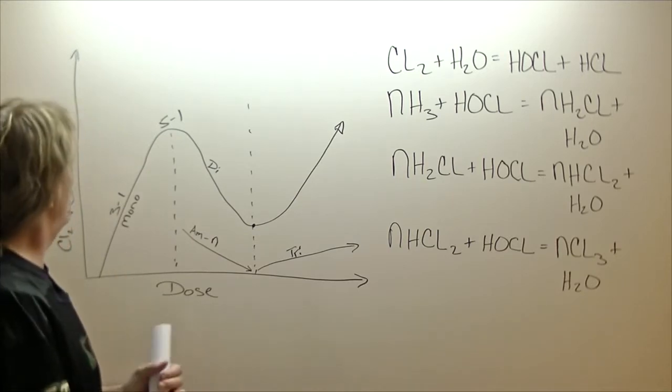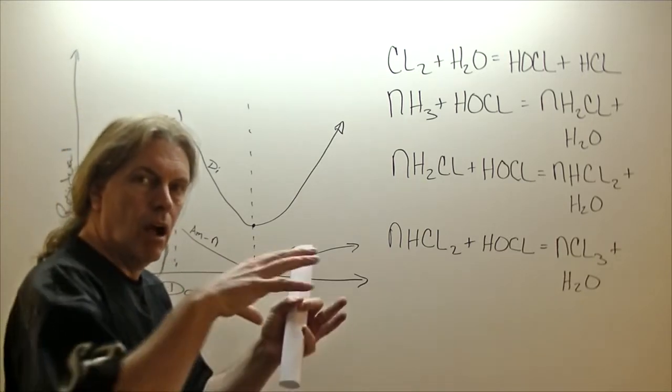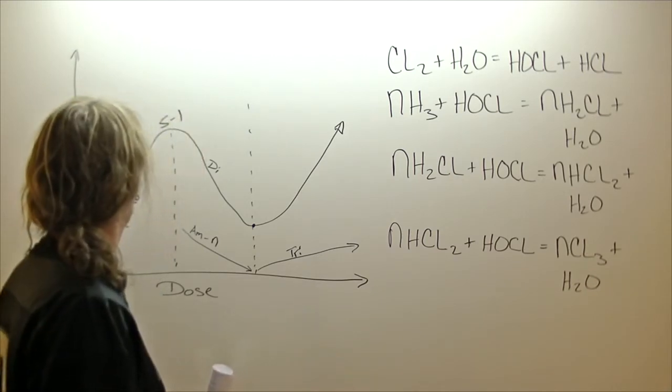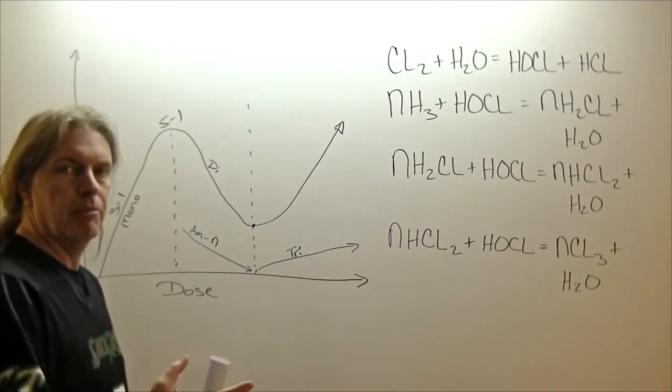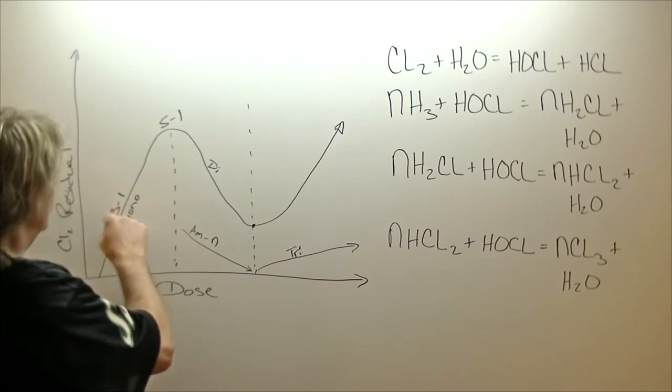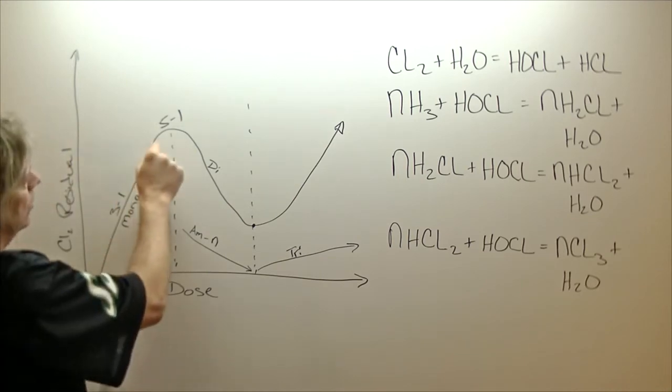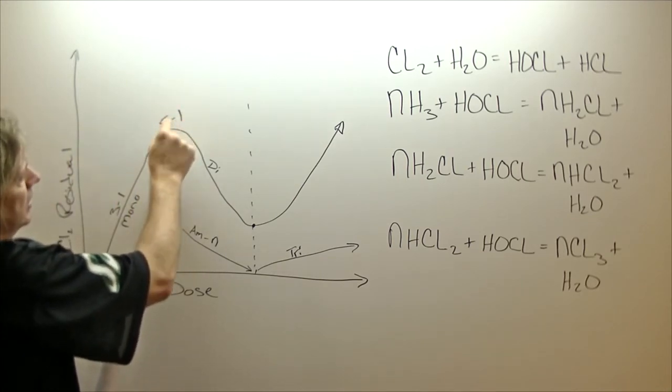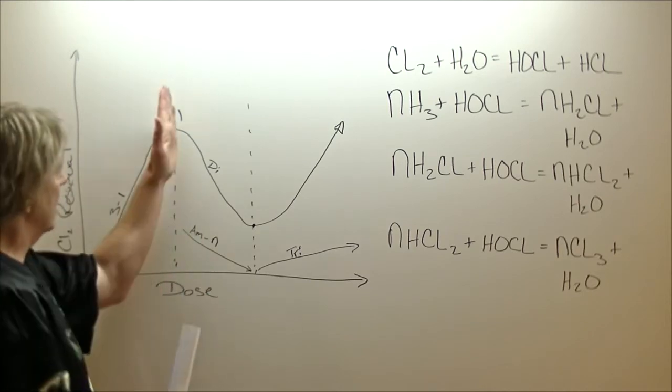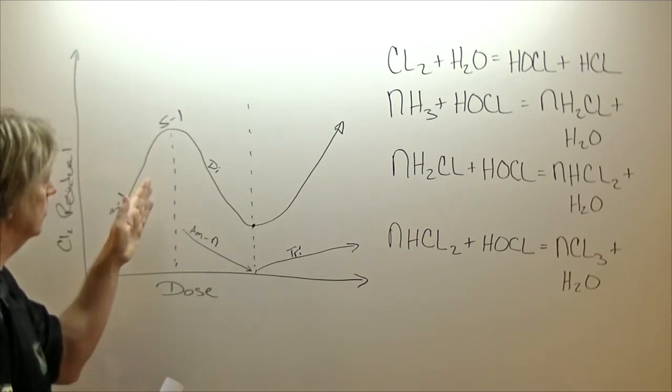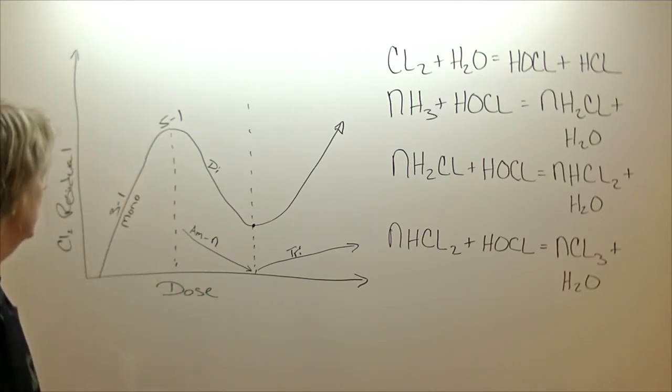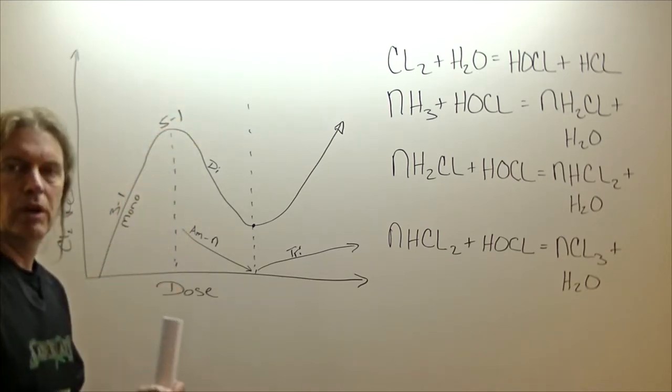So when you start adding ammonia to the water, you create chloramines. At a ratio of three to one, you're right here on the curve, five to one is about the maximum dose. That's the highest that you want to go to when you're creating that.